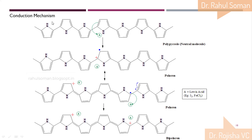The conductivity of polaron can be enhanced by adding more Lewis acid. Adding more Lewis acid extracts the radical ion from the polaron, giving a two-positive-charge system — called a bipolaron. This is more conducting because two holes, or two positive charges, allow electrons to move towards them. In all the structures, a negative counterion A⁻ is shown to balance the charge.